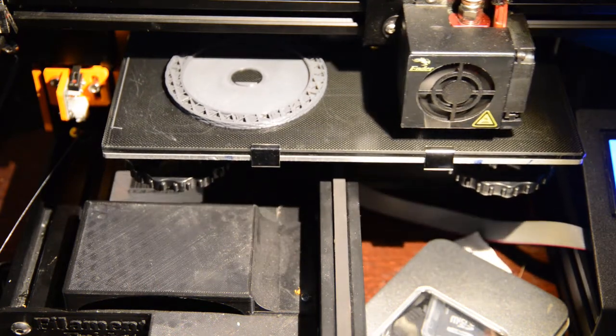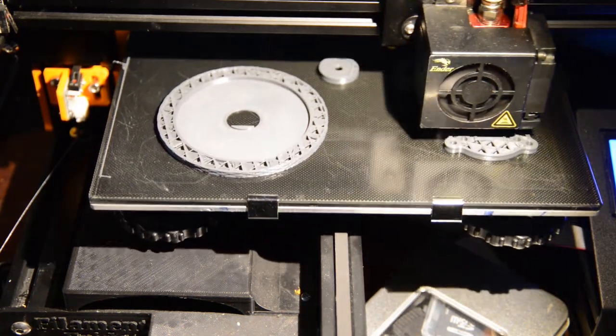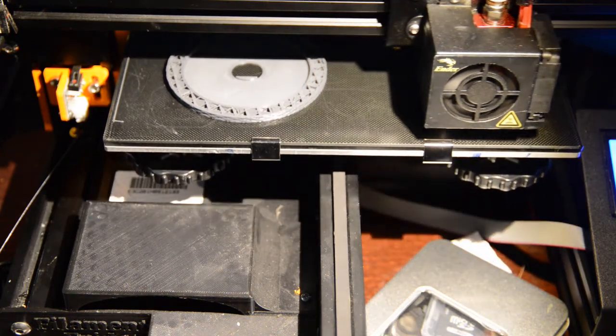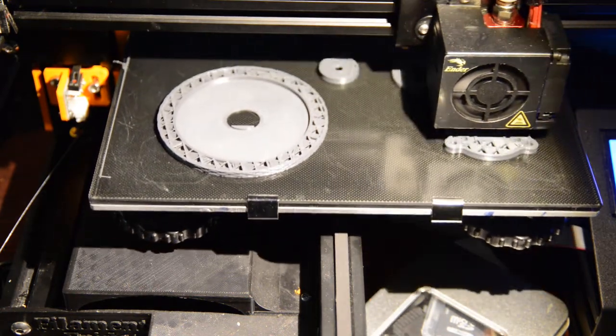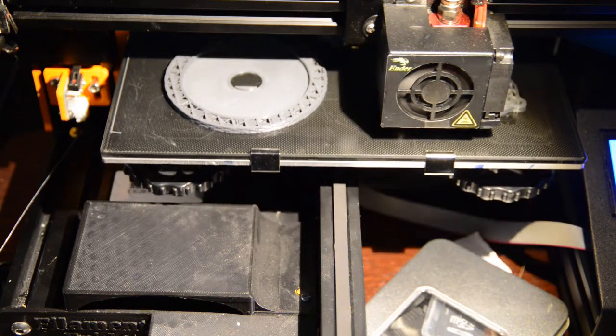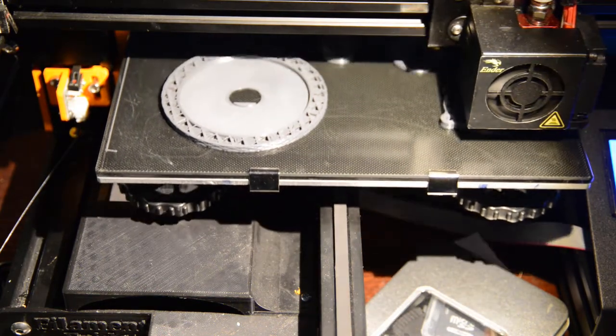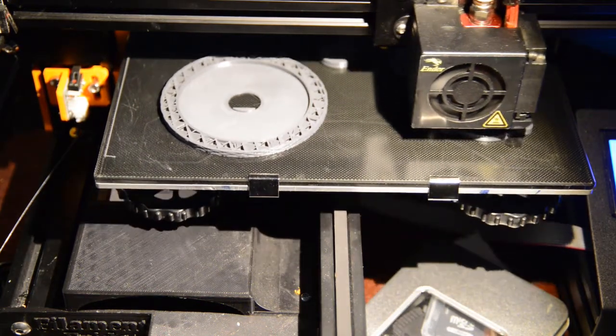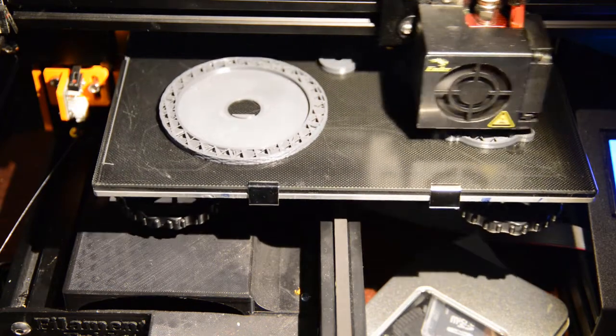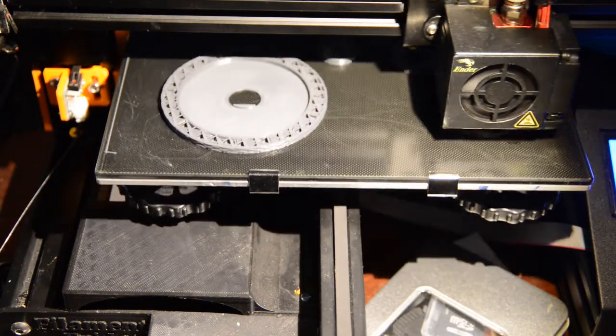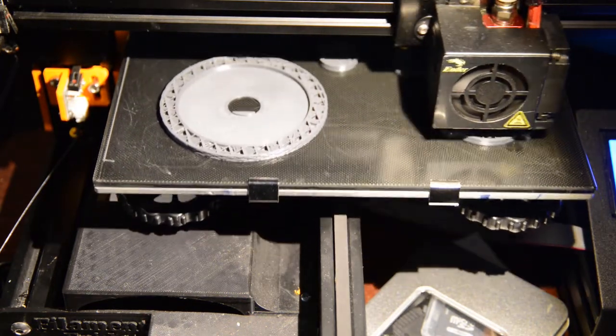You might also notice that the parts are not solid, but they have a honeycomb interior. It means they're still strong, but use relatively small amounts of material compared to a completely solid part. Printing material called filament is also cheap, with a kilogram costing under $20. A kilogram is more than enough for everything in this kit.